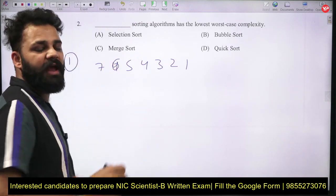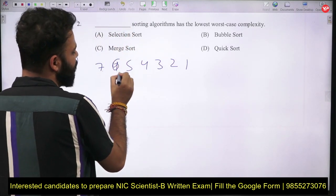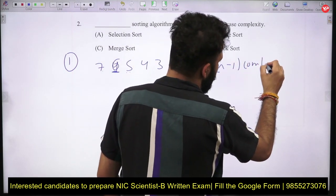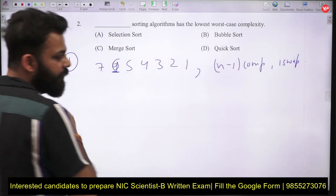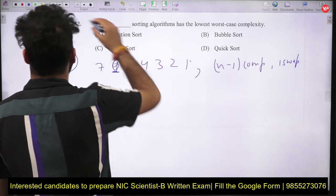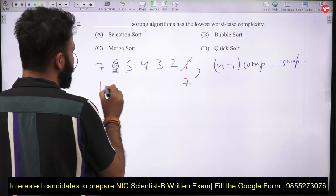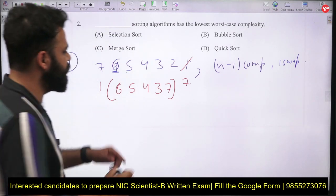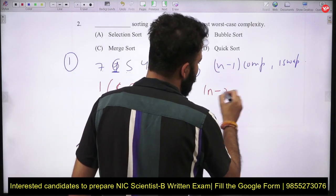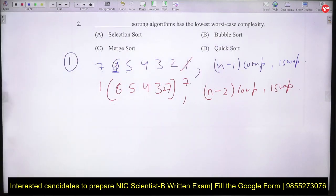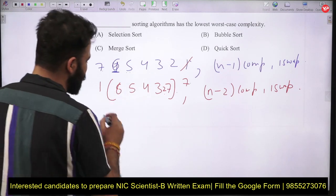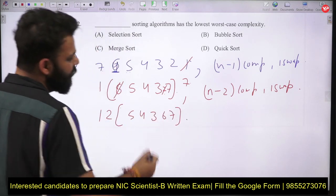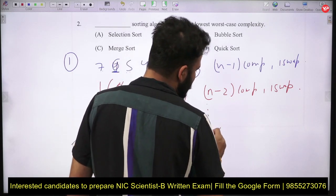For selection sort, consider the array [6, 7, 6, 5, 4, 3, 2, 1]. We make n-1 comparisons to find the minimum element and one swap to place it at the front. Then the remaining array repeats this process with n-2 comparisons and one swap, continuing until only two comparisons remain.